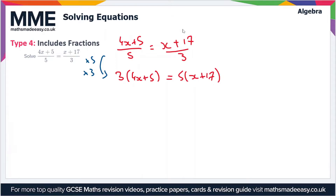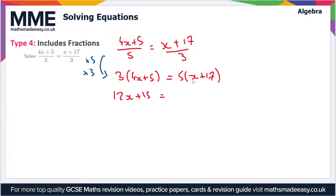This is what the next line looks like. The next step is to expand the brackets: 3 times 4x gives 12x, and 3 times 5 gives 15.